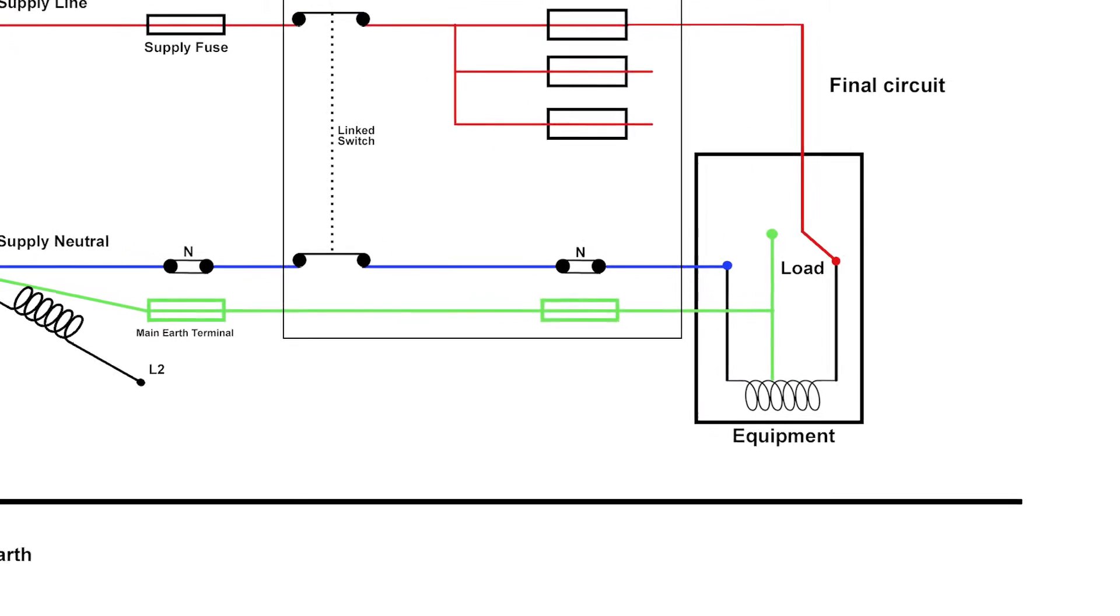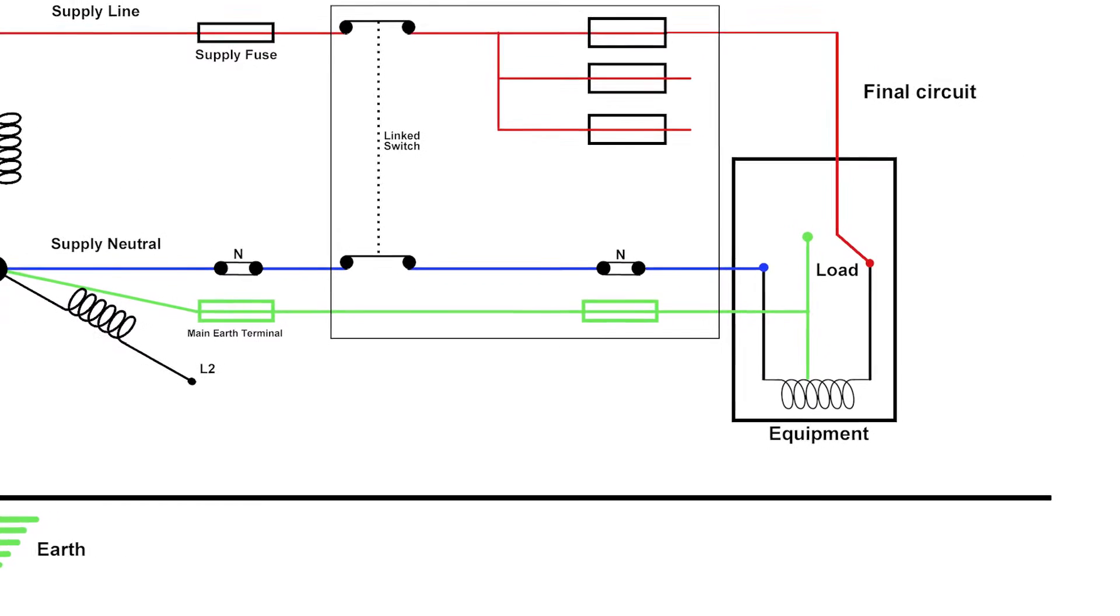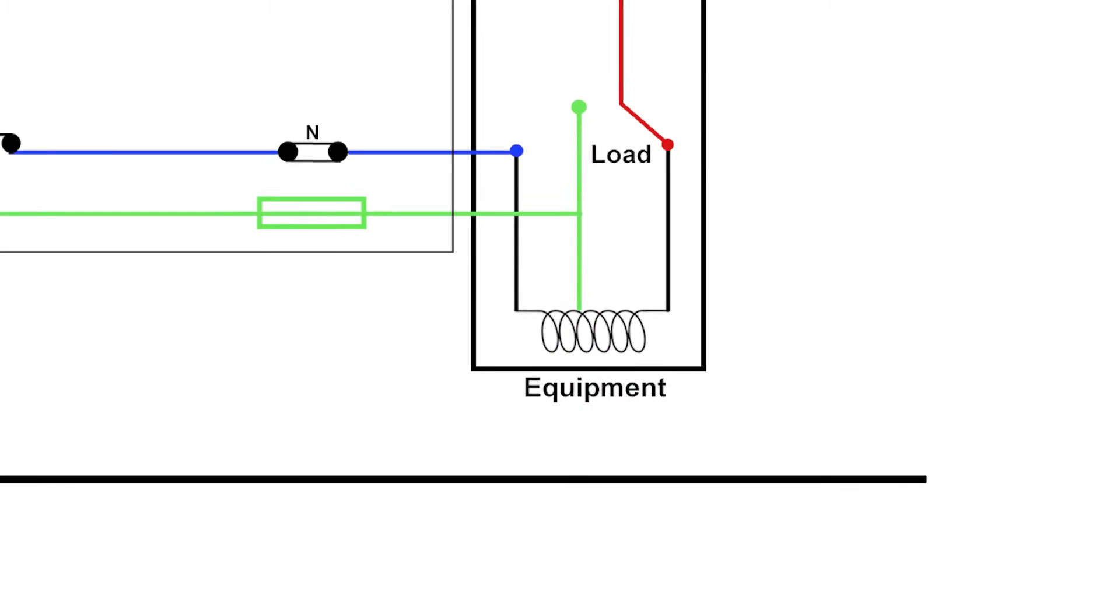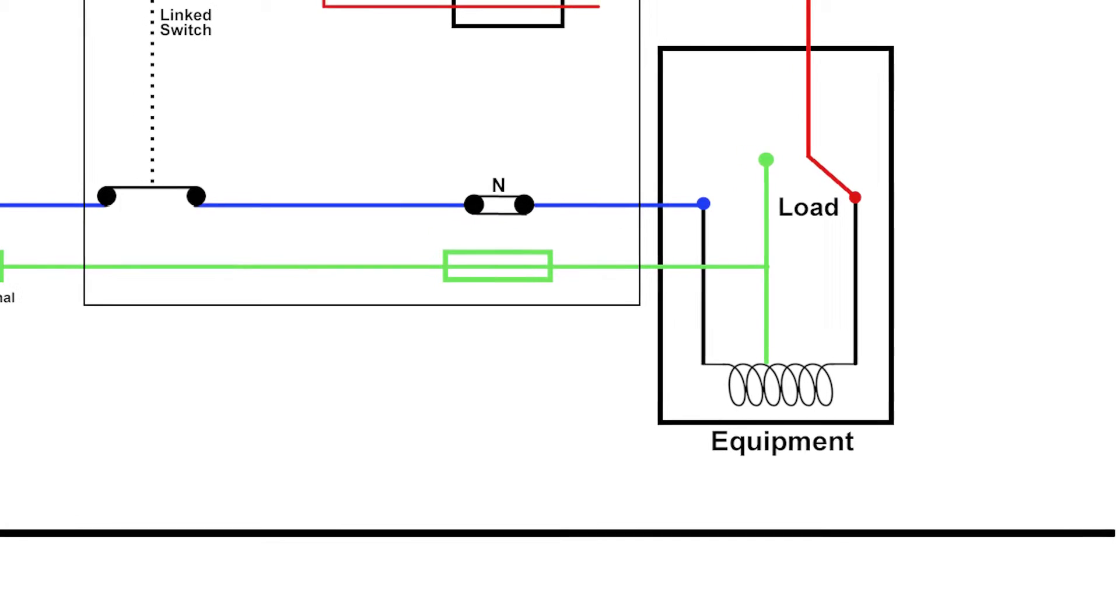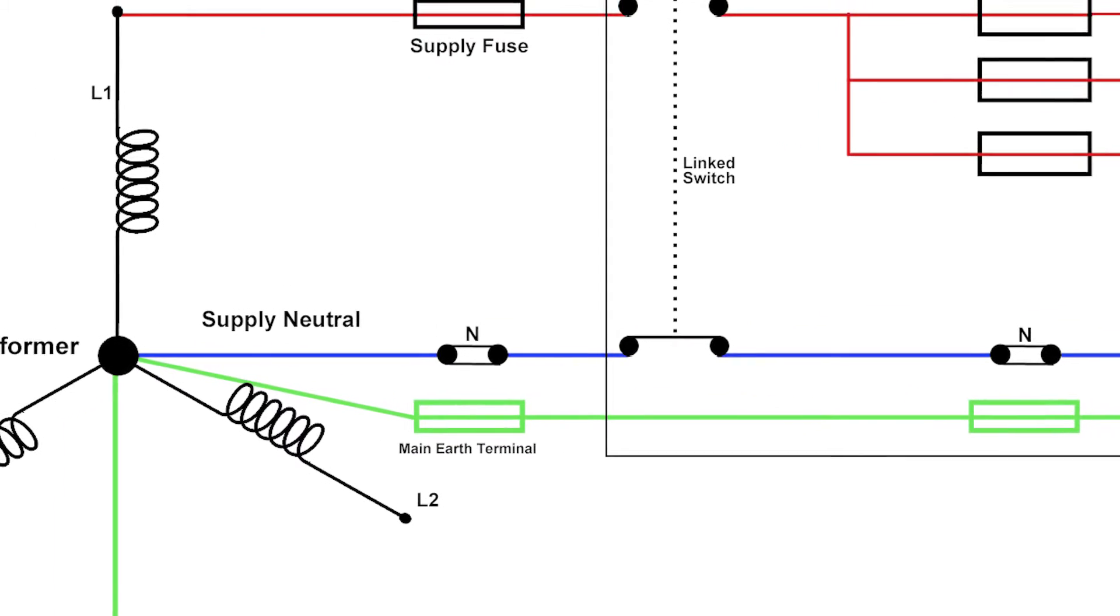Our system begins with our supply transformer which you'll find at the end of most rows or sometimes up on a pole somewhere. It supplies a voltage to us at between two phases of 400 volts, or for us in particular for this drawing, we're looking at 230 volts single phase. When we plug a piece of equipment into a socket, the current will flow from our transformer at a pressure of 230 volts. Remember that when we talk about voltage, we're talking about pressure.